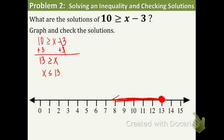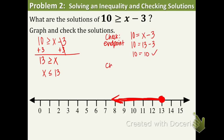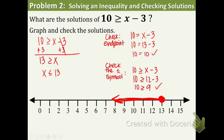You don't have to shade the whole way — you can just draw an arrow. Now let's learn the checking process. First, check the endpoint, which is 13. Plug 13 into the equation using an equal sign instead of the inequality symbol. What's 13 minus 3? That's 10. Does 10 equal 10? Yes, so the endpoint is correct. Now check the symbol: choose a number smaller than 13, like 12. Plugging in 12, is 10 greater than or equal to 9? Yes. So the symbol works, the endpoint works, and we're good. This is correct.